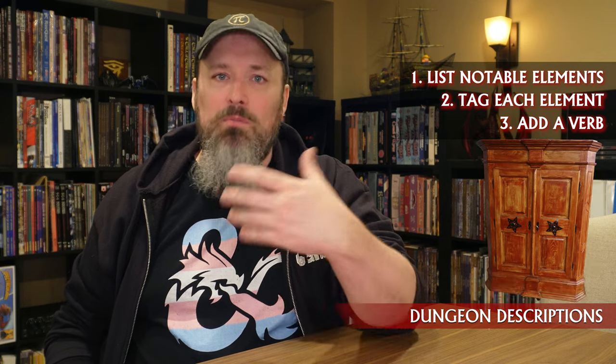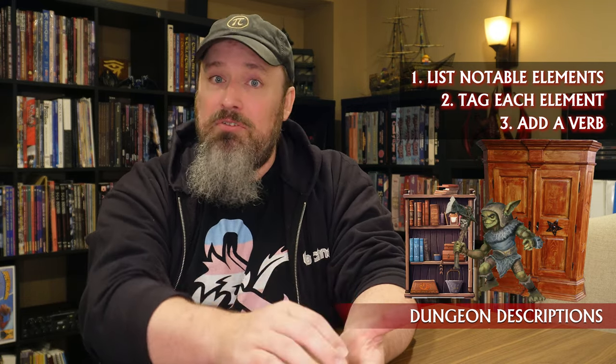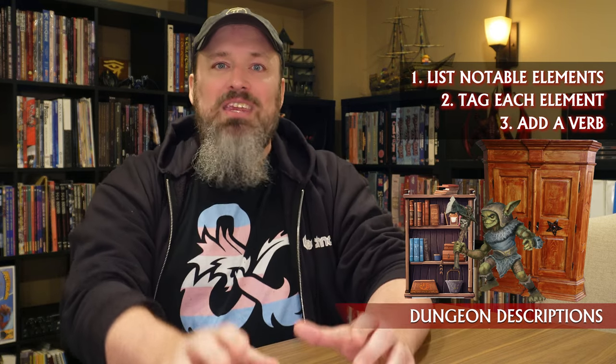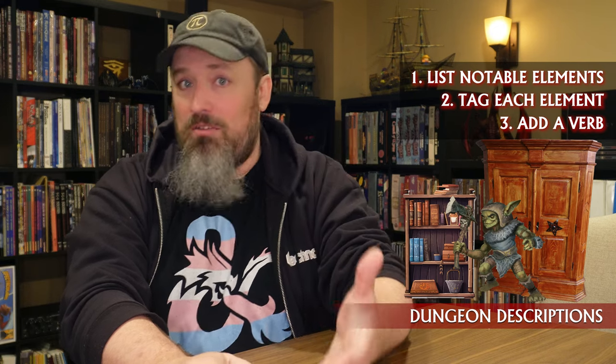What you're doing here is listing things in the scene — a wardrobe, a bookshelf, a goblin — and then dropping a descriptive tag and a verb on some or all of them. A horrid stench (smell) emanates from a wardrobe off to your left. On the opposite side of the room, there's a bookshelf stuffed full (sight) of thick tomes and tightly wrapped scrolls. There's a goblin pawing through the books, knocking them to the ground (verb). Seeing you, the goblin gapes its maw and screeches — that's a sound. And that's your three-of-five, your verb, and your formula for describing a dungeon room.